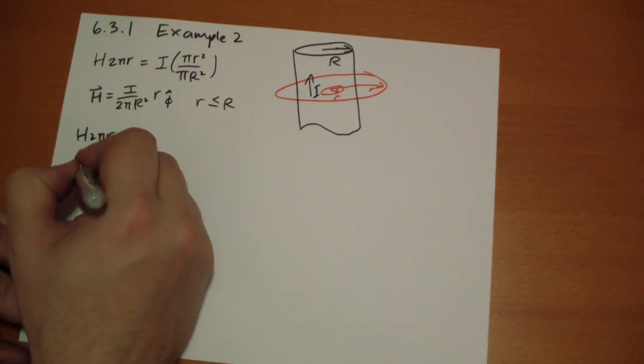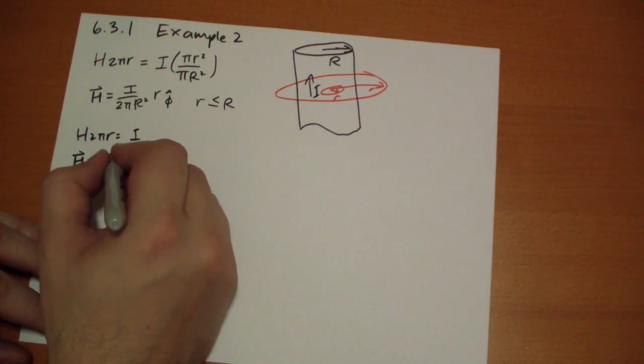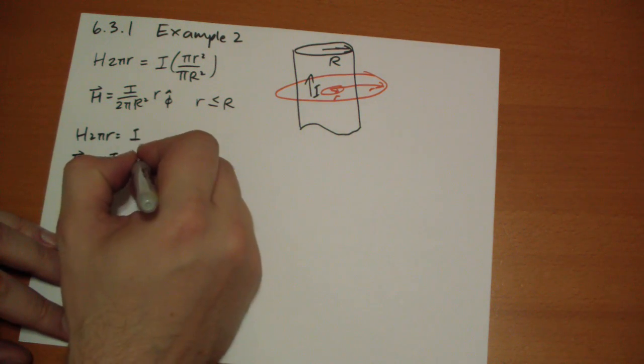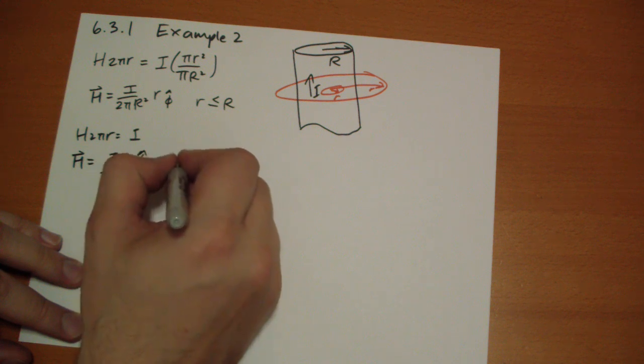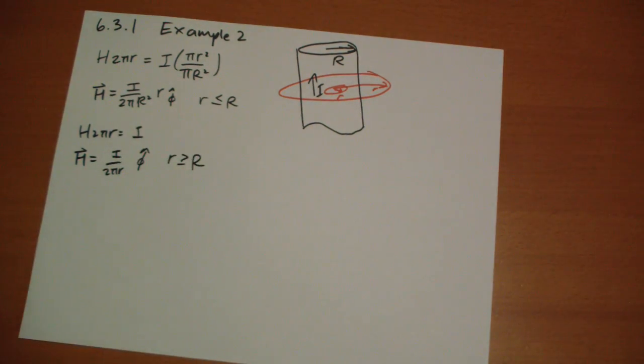So the end result is H vector is equal to I over 2 pi r, pointing in the phi hat direction. That's r is greater than or equal to capital R. Okay.